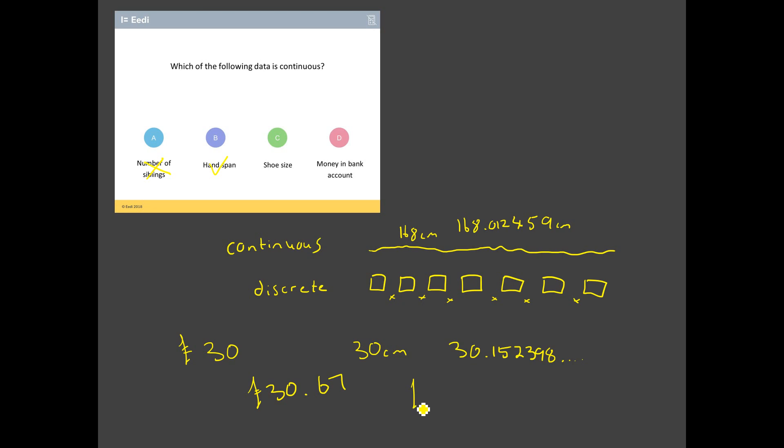Money in your bank. Now, you could have a whole number of pounds in your bank. So you could have 30 quid in your bank. You could also have pounds and pence, 30 pounds 67 in your bank. But what you can't have are things like this: 30 pounds 67.42, blah blah blah. It's one or the other. It's predefined intervals determined by the lowest interval, which is your pence. So it can't be that. So I think the only thing it can be is hand span.